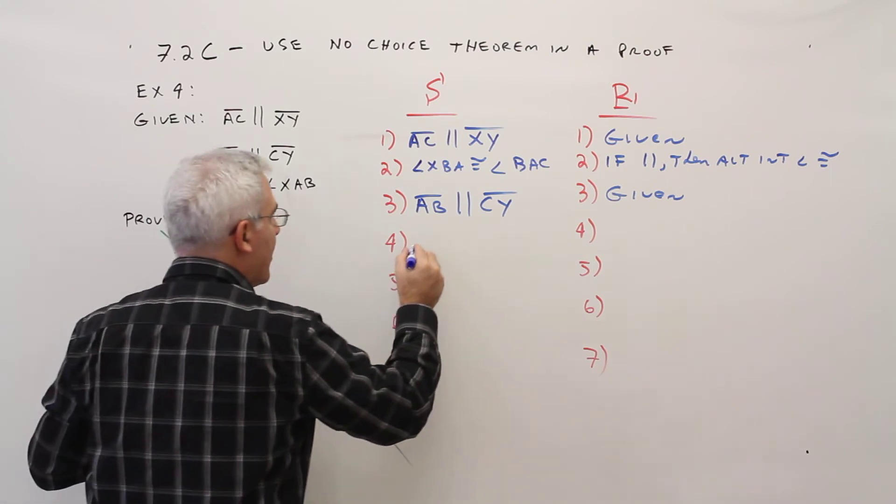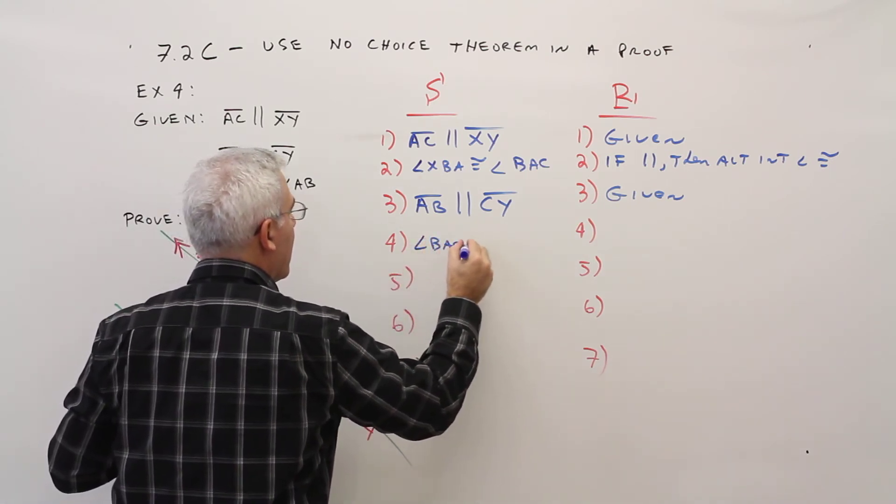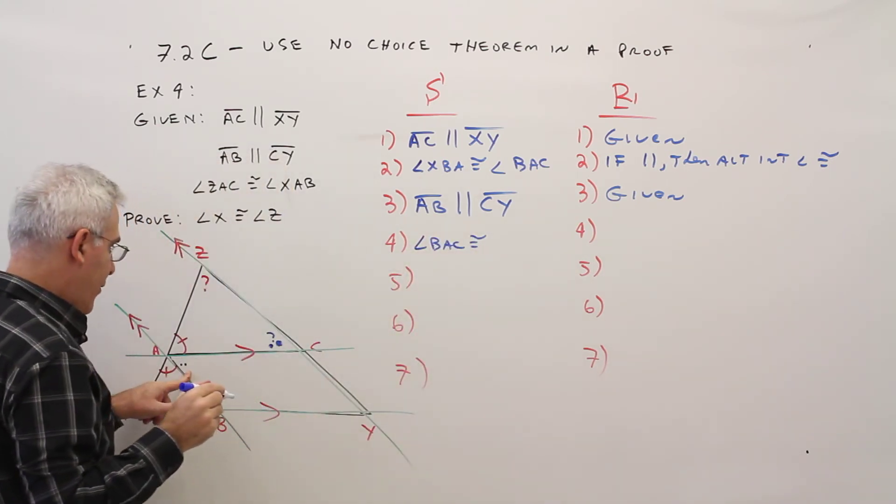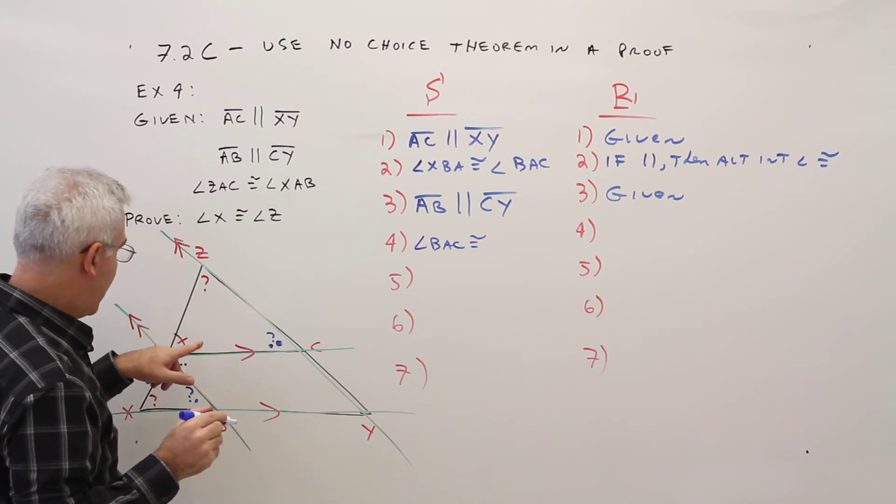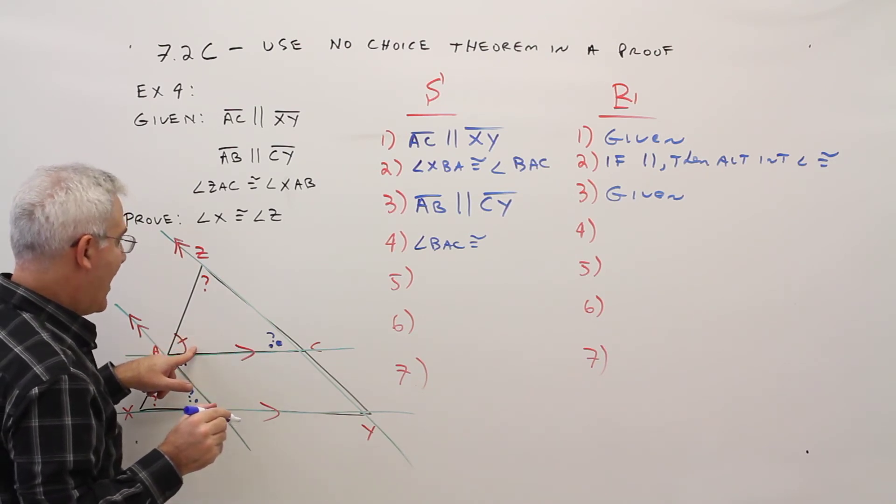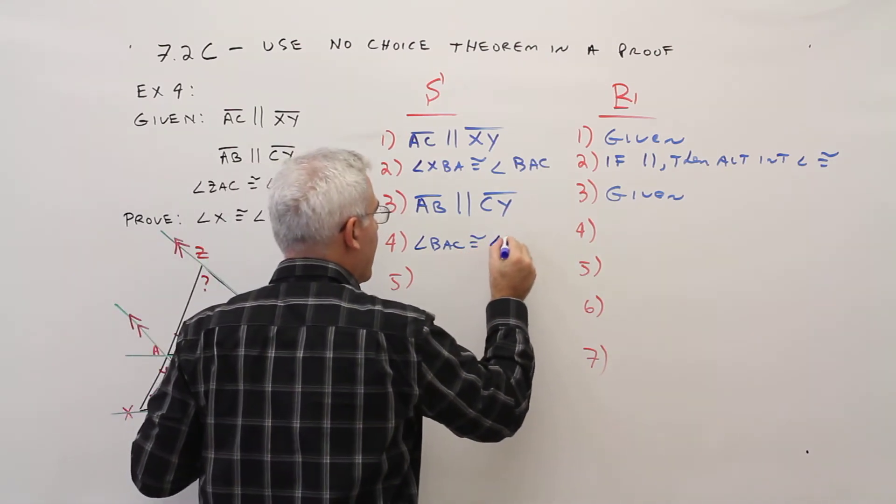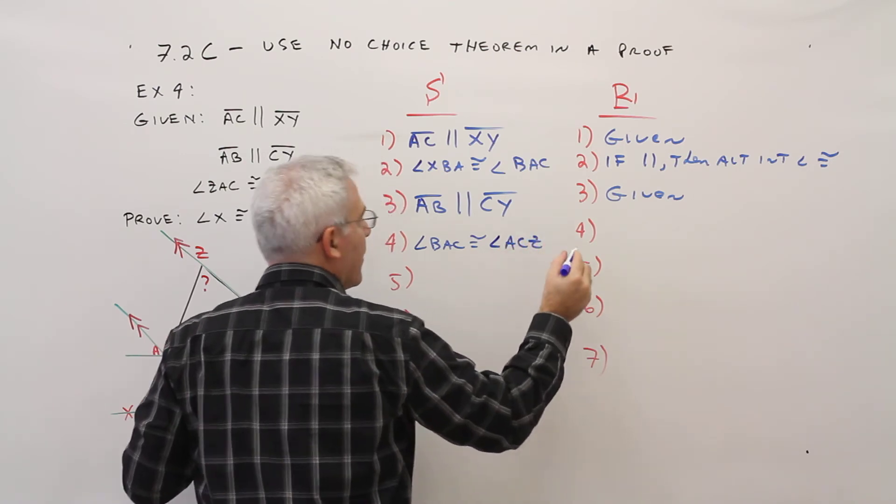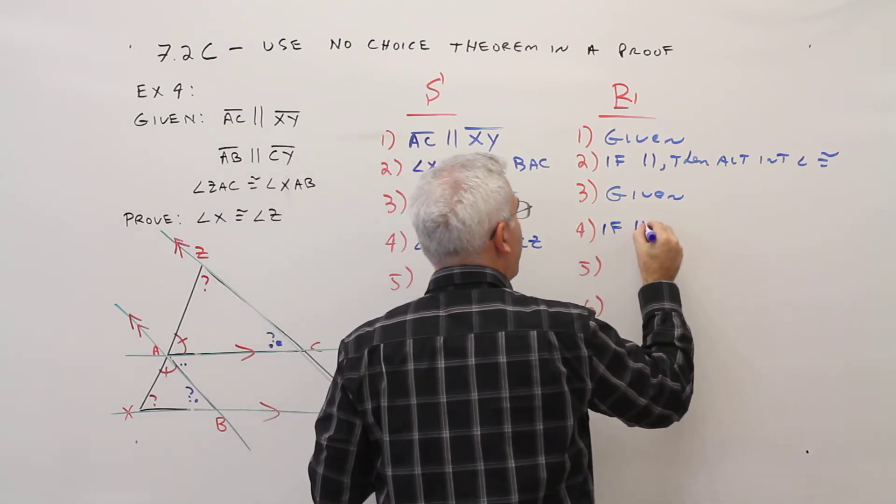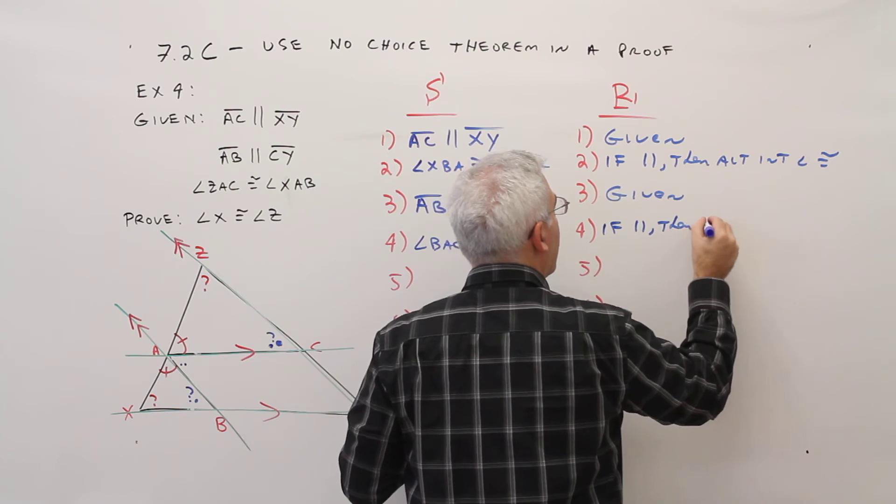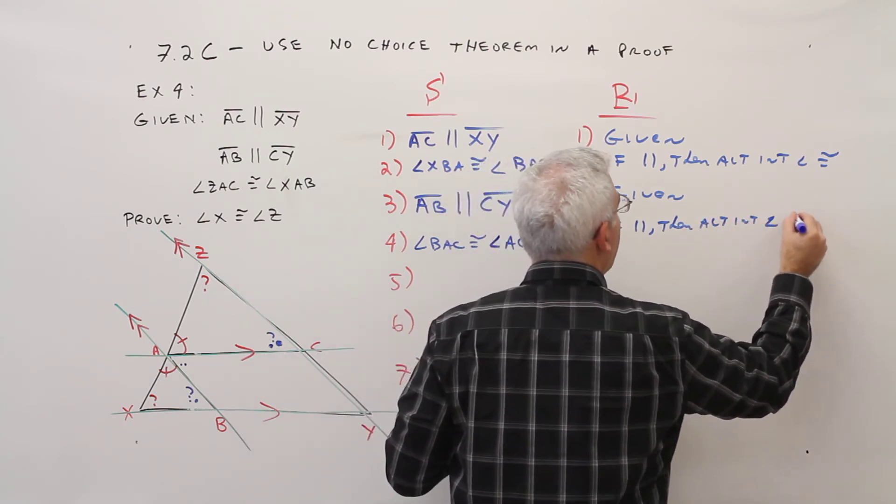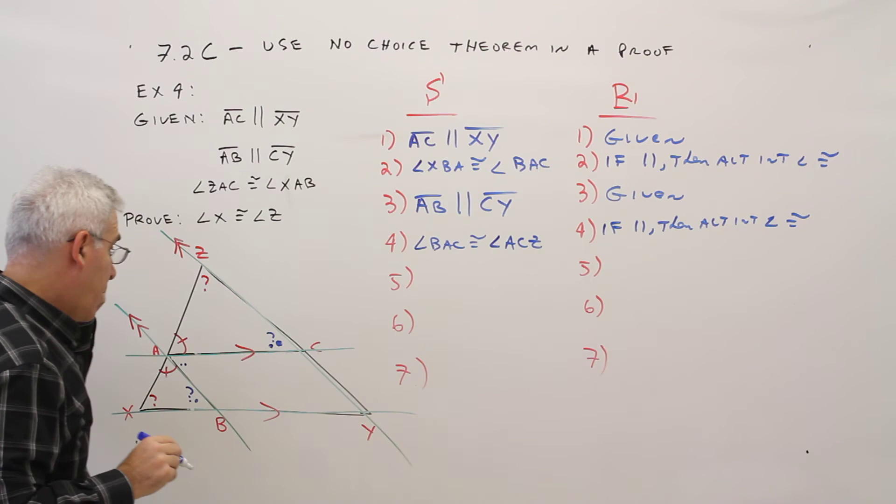So again, I'll call it angle BAC is going to be congruent to angle, I'll call it ACZ. If parallel, then alternate interior angles congruent.